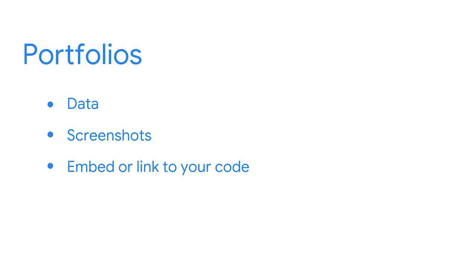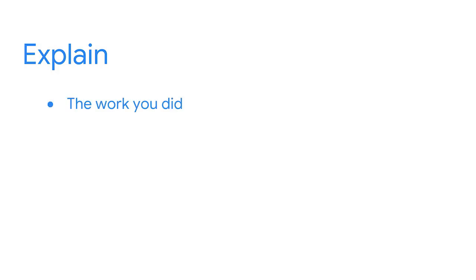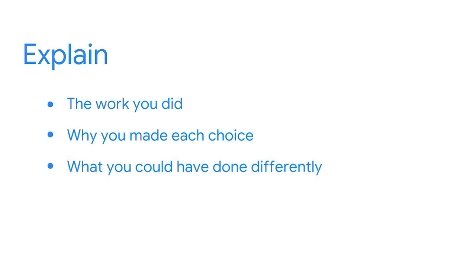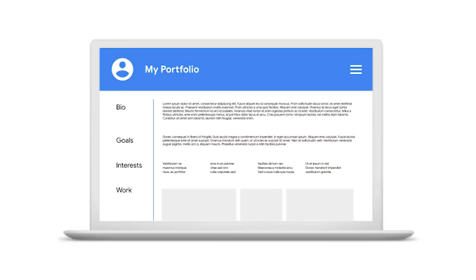If embedding isn't possible on the platform you choose, you can always include links to allow access to your projects. When you've included all of the relevant parts from your project in your portfolio, you should also explain your process. Describe what work you did, why you made the choices you did, and what you could have done differently. It also helps to include a short biography. By describing your professional goals and interests, you can personalize your portfolio and make it stand out against other applicants.